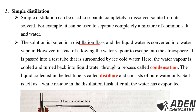In simple distillation, the solution is boiled in a distillation flask and the liquid water is converted into water vapor. Instead of allowing the water vapor to escape into the atmosphere as in evaporation and crystallization, in simple distillation it is directed into a test tube surrounded by ice-cooled water. The ice-cooled water condenses the steam back into liquid water through a process called condensation. The liquid collected is called the distillate and consists of pure water only; salt is left as a white residue in the distillation flask.